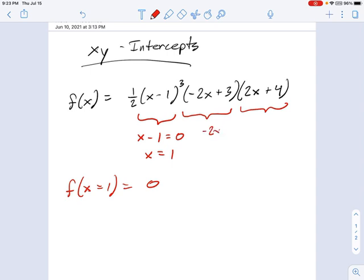If we solve the equation negative 2x plus 3 equals 0, we get 3 equals 2x, which leads us to 3 halves equals x. That's another 0 of the equation.